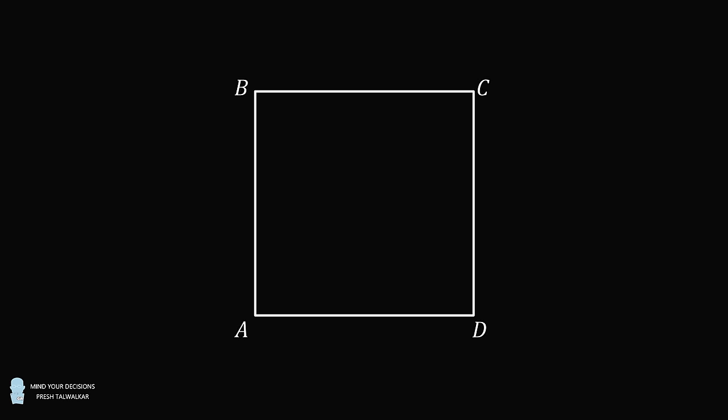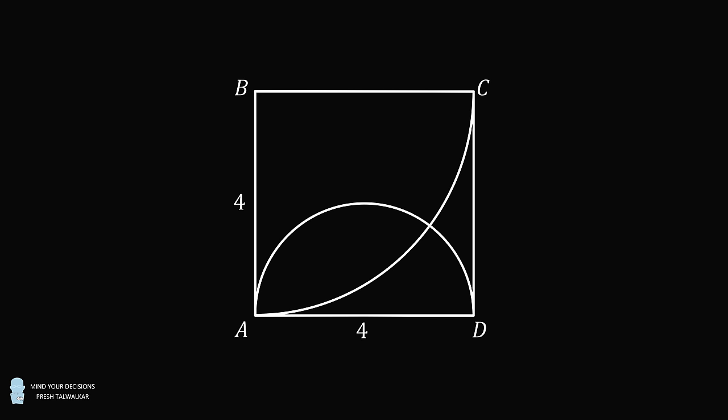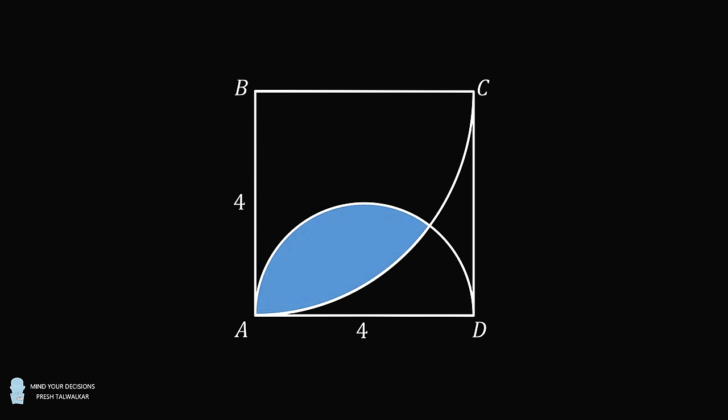Hey, this is Presh Tawakkar. Here's a fun problem. Start with square ABCD. The square has a side length equal to 4. Construct a quarter circle centered at B that connects A and C. Then construct a semicircle with a diameter equal to AD. The quarter circle and the semicircle overlap. What is the area of the overlap between these two shapes?